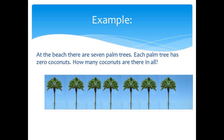Let's try another example. At the beach, there are seven palm trees. Each palm tree has zero coconuts. How many coconuts are there in all? Well, each tree has zero coconuts, so that's like saying zero plus zero plus zero plus zero plus zero plus zero, which equals zero. So seven times zero is zero.